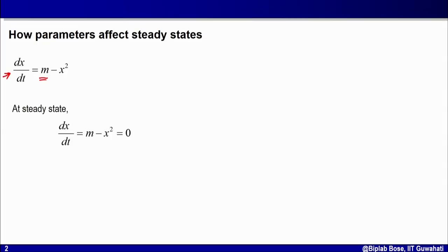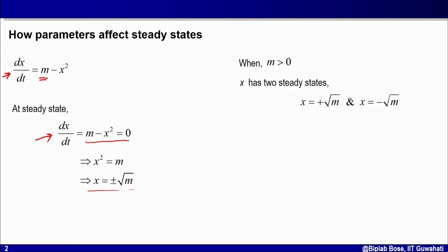Let us start the steady state analysis for this ODE. We know that for a steady state, the derivative should be equal to zero, that is dx/dt = 0. That means m − x² = 0, so separating x and m gives x² = m. Therefore, my steady state solutions are x = ±√m. So I have two steady state values: x = +√m and x = −√m.